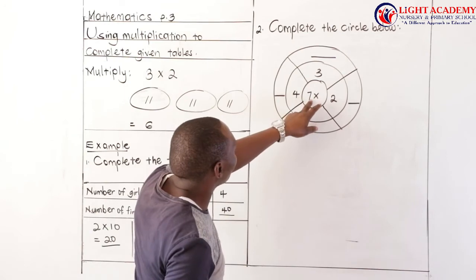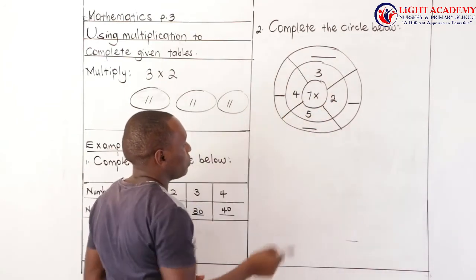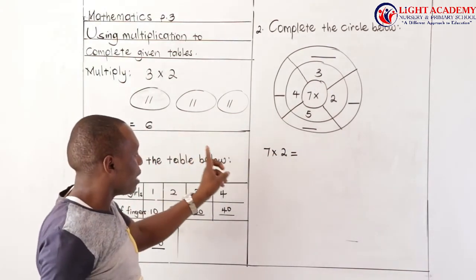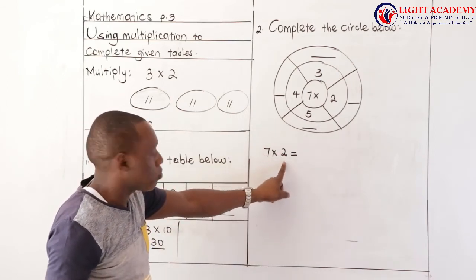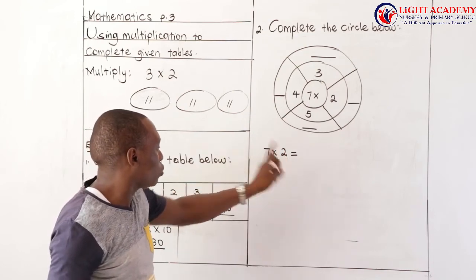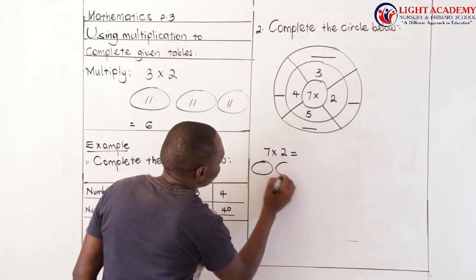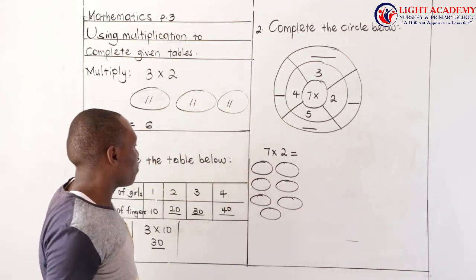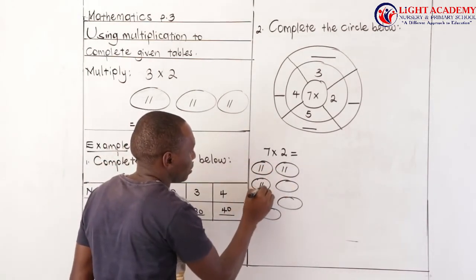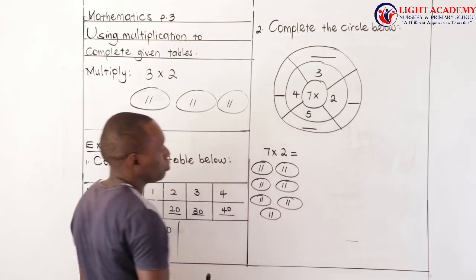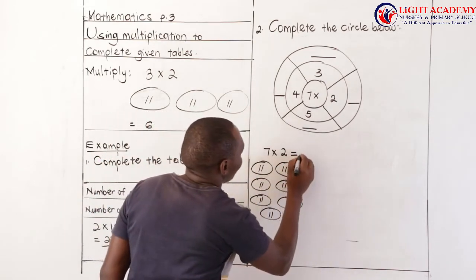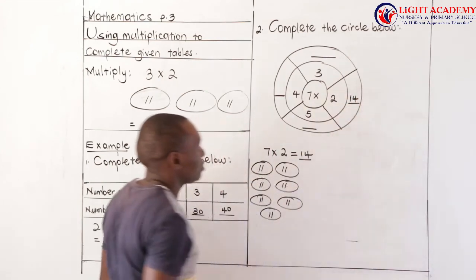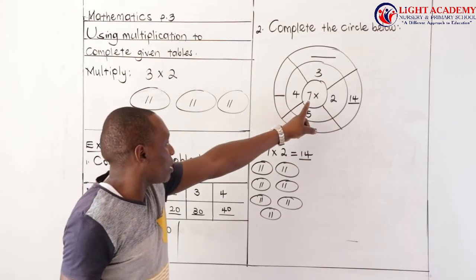I will start with seven multiplied by two. Using the idea of groups: these are seven groups of two. I draw seven groups and put two sticks in each group. When I count the total number of sticks in the seven groups, the answer is fourteen. So seven multiplied by two equals fourteen. I write fourteen in the corresponding space in the outer circle.